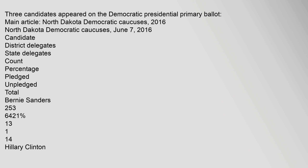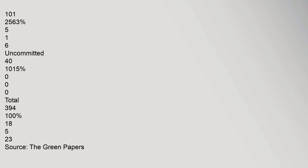North Dakota Democratic caucuses, June 7, 2016: Bernie Sanders received 25.3 percent with 6,421 votes, earning 13 pledged and 1 unpledged delegate for 14 total. Hillary Clinton received 25.63 percent with 101 votes, earning 5 pledged and 1 unpledged delegate for 6 total. Uncommitted received 41.015 percent with no delegates. The total was 394 votes and 100 percent, with 18 pledged and 5 unpledged for 23 total.